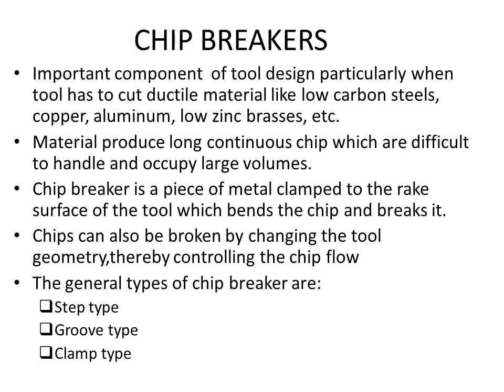Chip breakers are an important component of tool design, particularly when the tool has to cut ductile materials like carbon steel, copper, aluminium, and low-zinc brass, which produce long continuous chips that are difficult to handle and occupy large volumes. A chip breaker is a piece of metal clamped to the rake surface of the tool which bends the chip and breaks it. The three types of commonly used chip breakers are: step type, groove type, and clamp type.